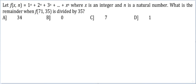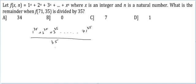Let's look at this question. Let f(x, n) be equal to 1 raised to the power n plus 2 raised to the power n plus 3 raised to the power n, and so on till x raised to the power n, where x is an integer and n is a natural number. What is the remainder when f(71, 35) is divided by 35? So effectively you have 1³⁵ + 2³⁵ + 3³⁵ + ... + 71³⁵, the whole thing divided by 35.